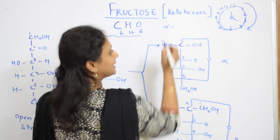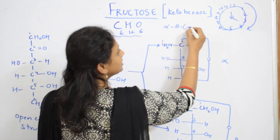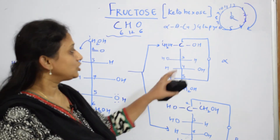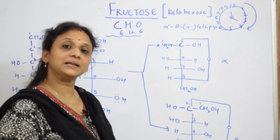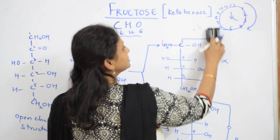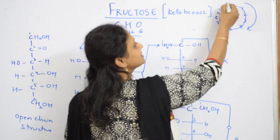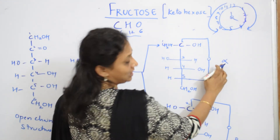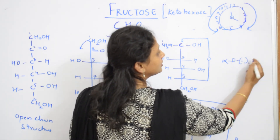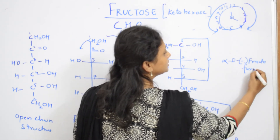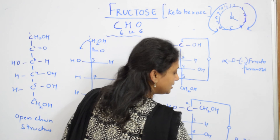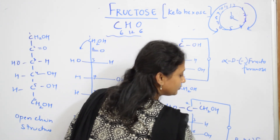For glucose, since it rotates plane polarized light in the clockwise direction, we write it as alpha-D-(+)-glucopyranose. Here for fructose, the structure rotates the plane polarized light towards the left — so the stable product rotation is towards the left. Therefore we write it as alpha-D-(-)-fructofuranose, because furanose is a five-membered ring which we will draw shortly. Similarly, beta-D-(-)-fructofuranose.